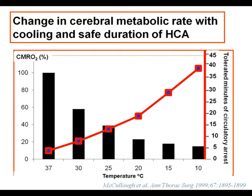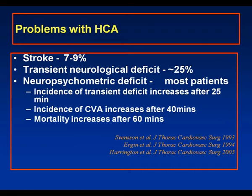These data are directly comparable to those achieved by other groups and reported a decade ago. We know now that HCA alone is not compatible with good results for the majority of patients. There's an important stroke risk, a very important transient neurological deficit risk, and neuropsychometric deficit occurs in most patients. The incidence of transient deficit increases after 25 minutes of deep hypothermia, and the incidence of stroke and mortality increase after 40 and 60 minutes respectively.